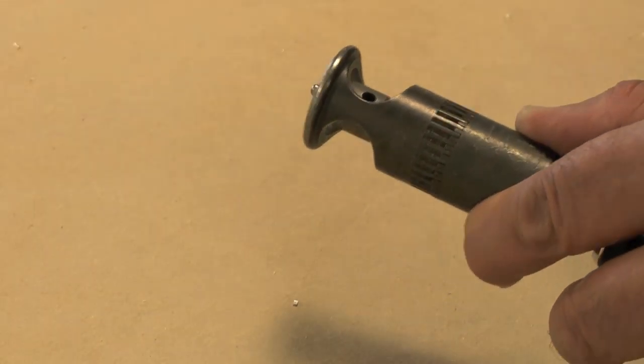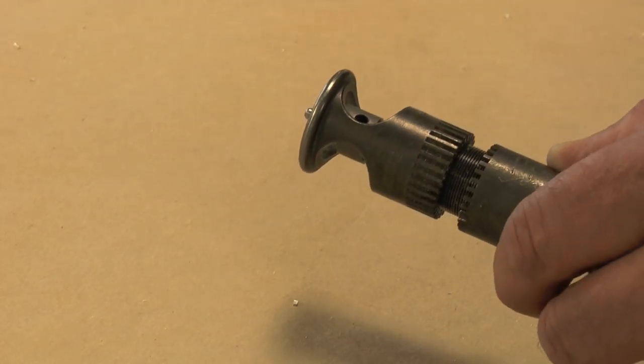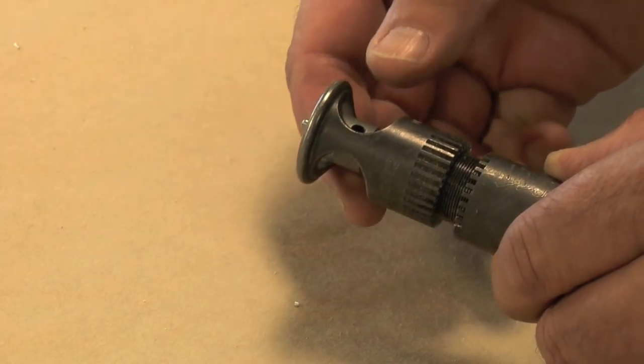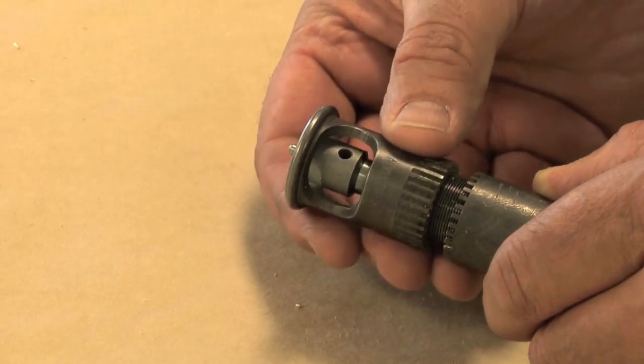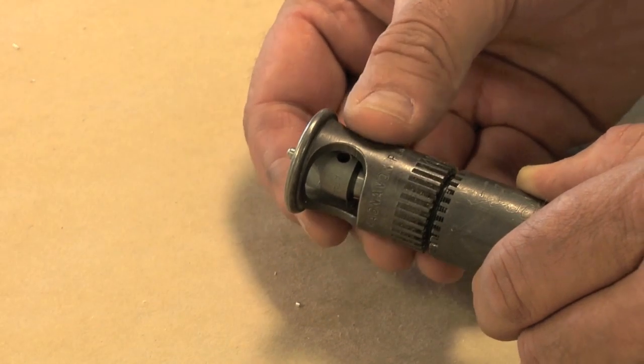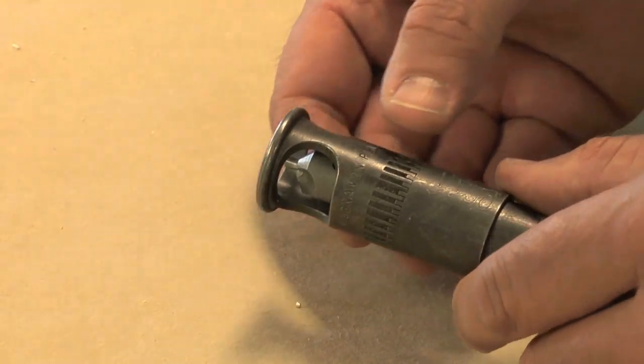The Microdial body is extendable, which determines the depth of the countersink. Each castellation on the housing equals a value of 1 thousandths of an inch depth.